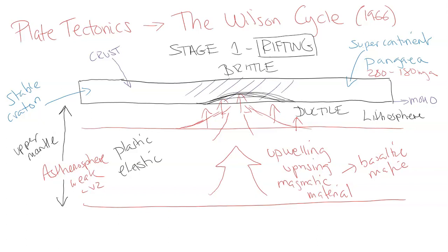Whereas the asthenosphere that's more plastic and that's more elastic in nature, like a plastic bottle where you can move it, you can deform it, you can change its shape, it'll go back to its original shape of a plastic bottle. The crust is brittle, the lithosphere is more ductile, and then you've got the elastic plastic asthenosphere which has the convection currents working to produce upwelling and rising magma.